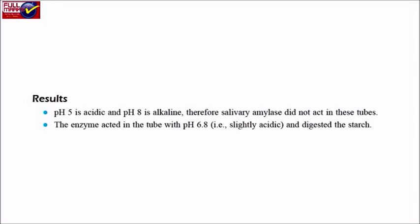Results: pH 5 is acidic and pH 8 is alkaline, therefore salivary amylase did not act in these tubes. The enzyme acted in the tube with pH 6.8, that is slightly acidic, and digested the starch.